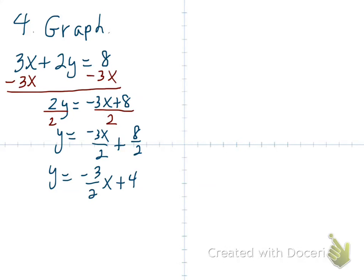Our y-intercept is 4, so let's put that on. Our slope is negative 3 halves, so we go down 3 and, since the run is positive 2, we go right 2. Let's connect our dots — there's our graph. Any point on this line, if you take its x and y value and plug it into this equation, it makes the equation true.